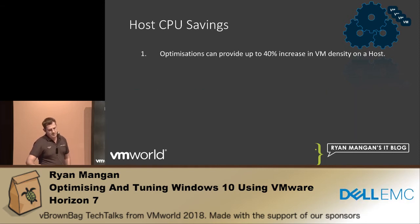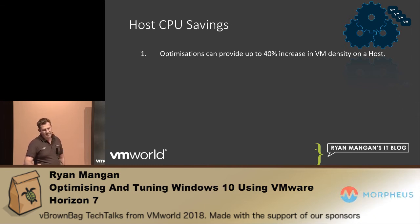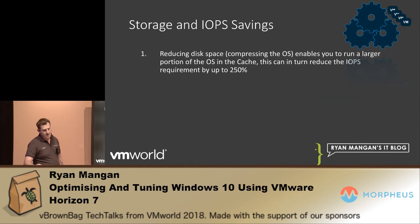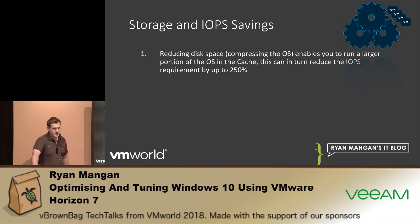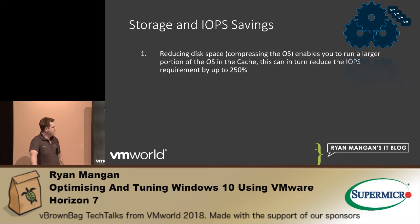CPU is one of the biggest contentions on the hypervisor, and this can be reduced by 40% through optimization. Storage is one of the most expensive parts of IT infrastructure. By reducing image size, not only does it improve storage space, you also get improvement in IOPS because the image may be a quarter of its original size — a lot more of that image can be cached, which improves performance further.